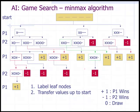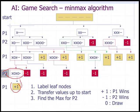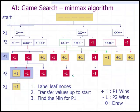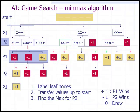Next, transfer the values up to the start. At the lowest level, player one's only possibility is plus one, so that transfers up. Moving up the tree: it's player two's turn, so player two takes the minimum of the choices — the minimum is negative one, and that transfers to the node. We continue propagating values up: player one takes the maximum at their levels, choosing plus one where available. Player two always takes the minimum, selecting negative one when possible.